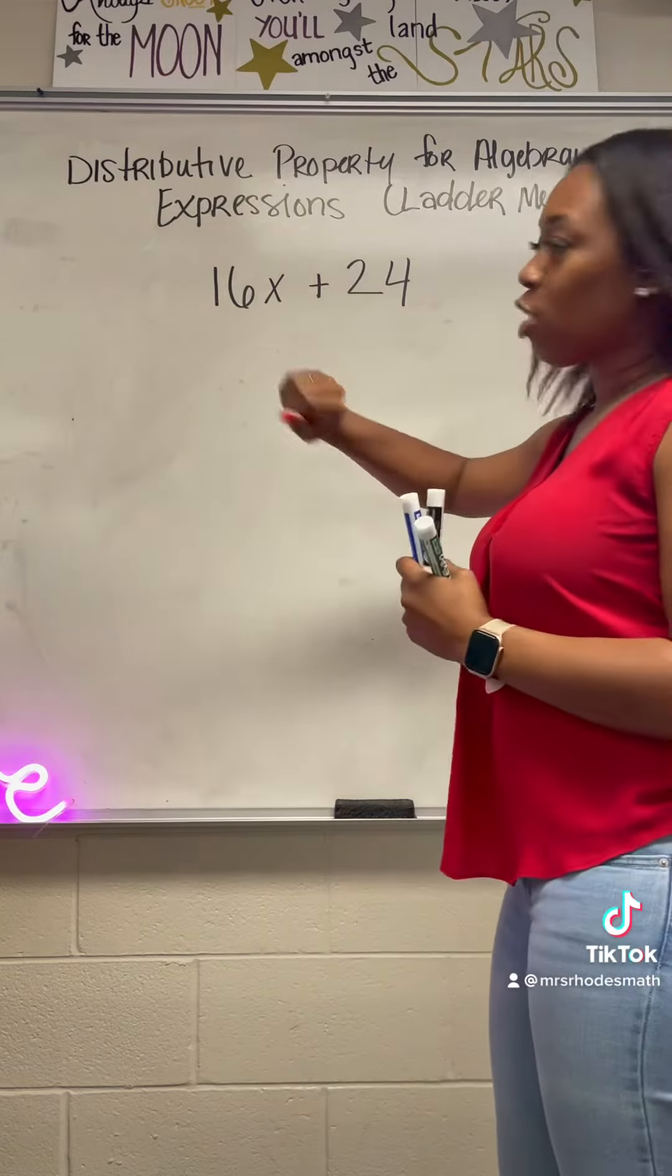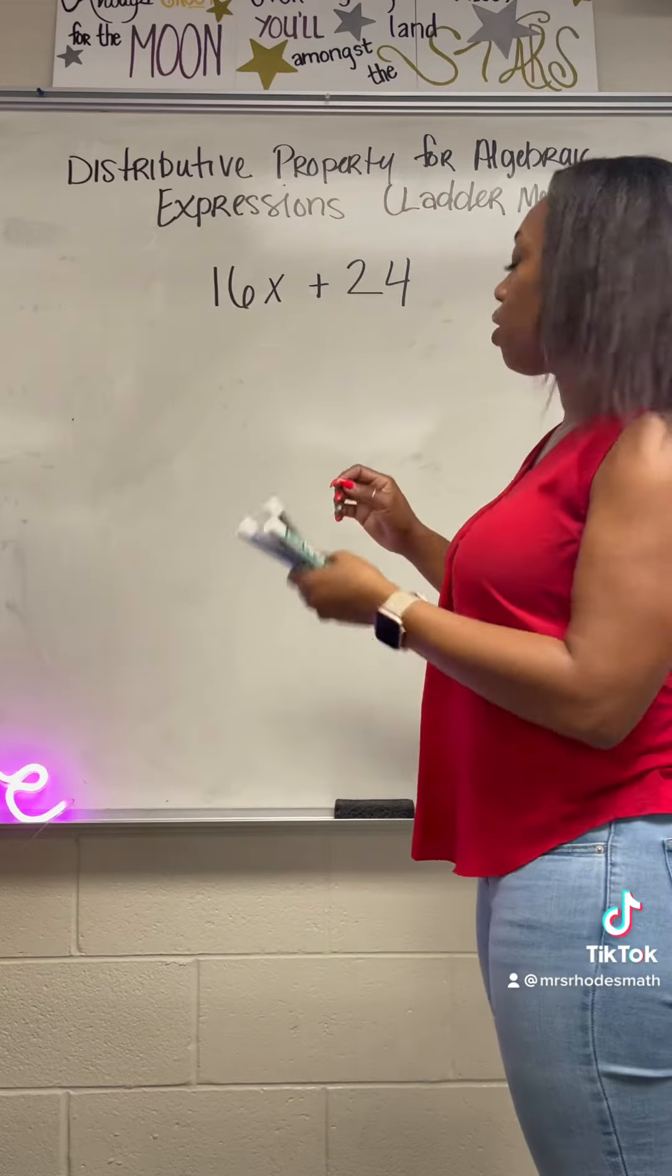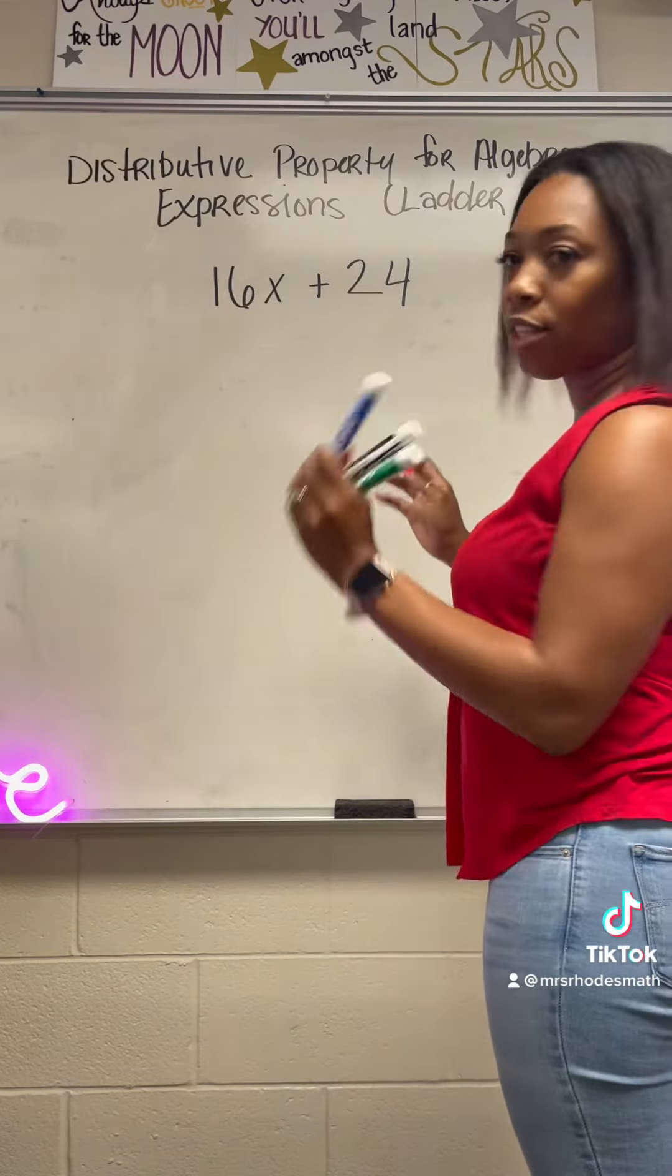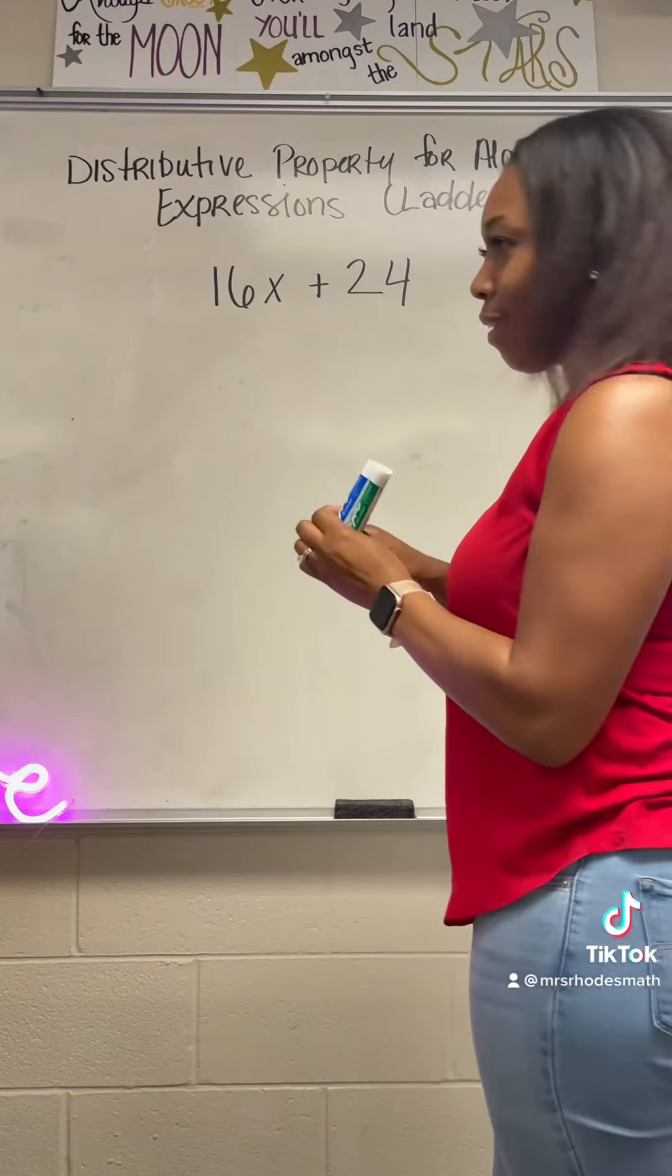We're going to use the expression 16x plus 24. The ladder method for distributive property basically looks like this.